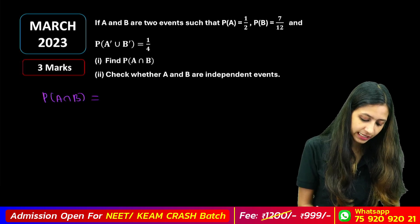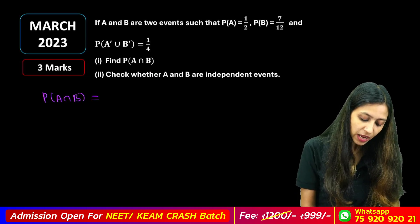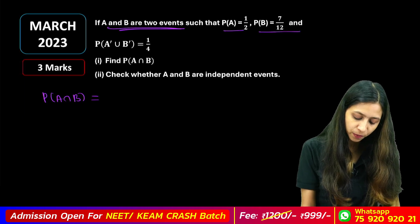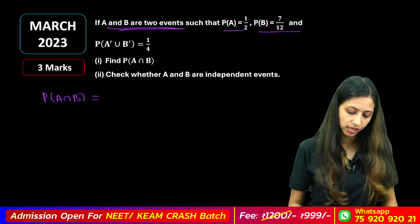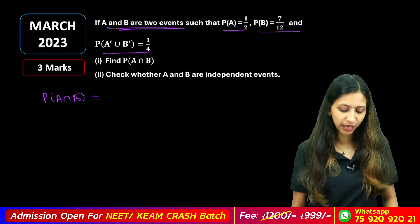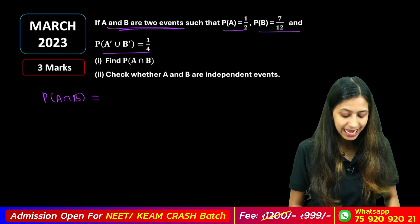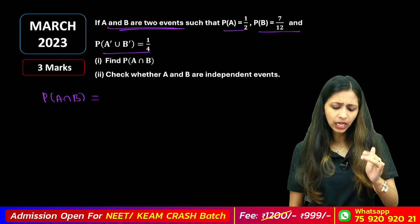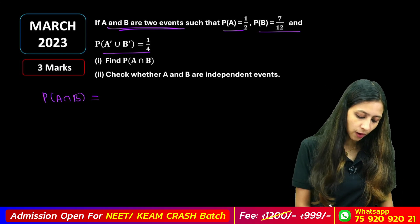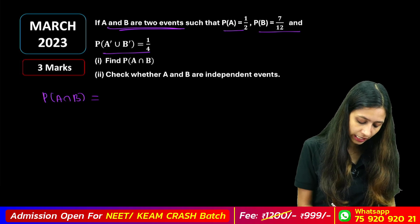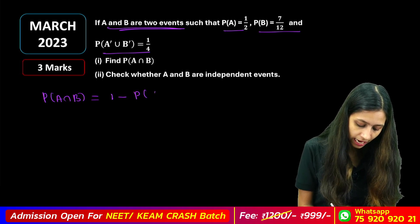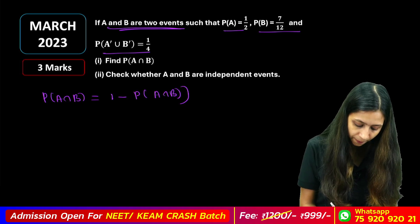Now, P of A intersection B. If A and B are two events, and it says P of A equal to 1 by 2, P of B equal to 3. We need to find P of A complement union B complement, and P of A intersection B.